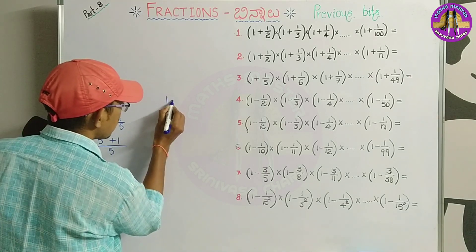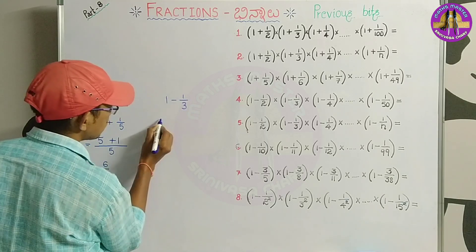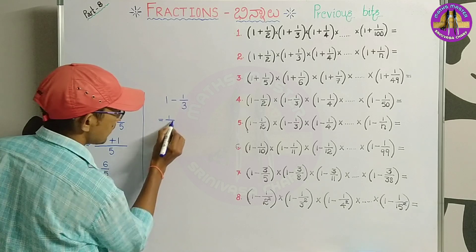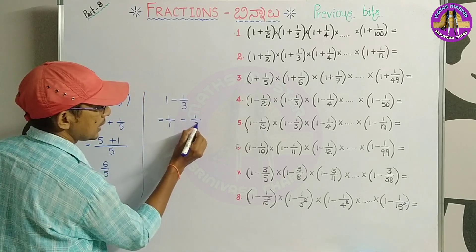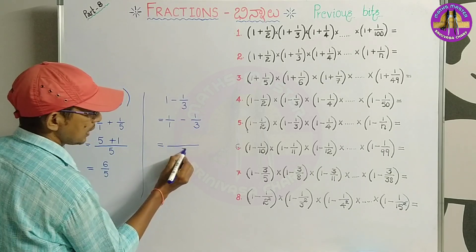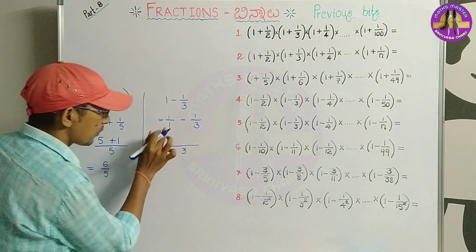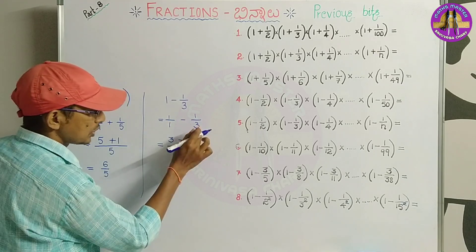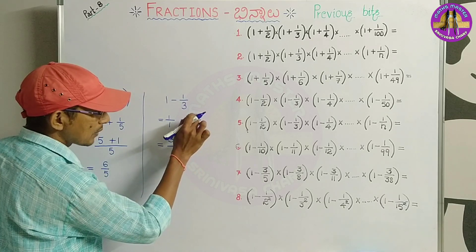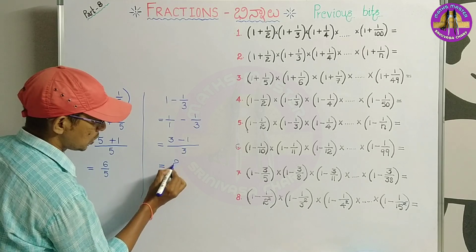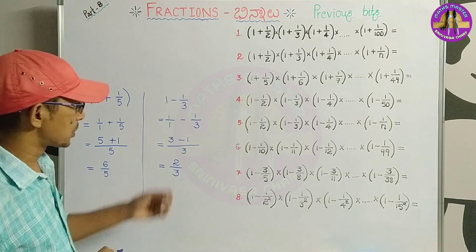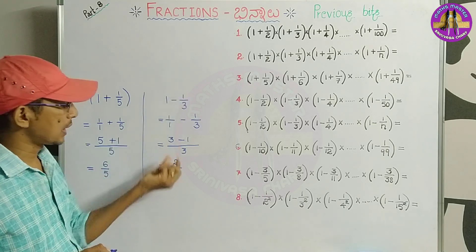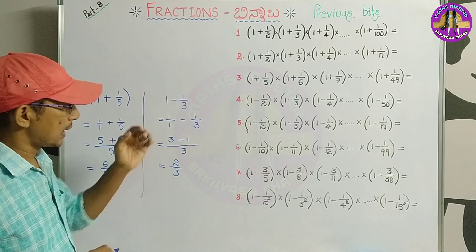Next is 1 minus 1 by 3. The LCM for 1 and 3 is 3. Three ones are 3 minus 1, so the answer becomes 2 by 3. A complete part has 3 parts; subtract 1 part, leaving 2 parts — that is 2 by 3.